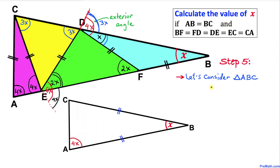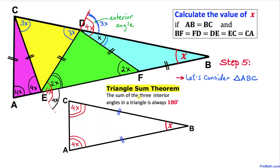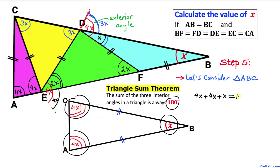Here is our final step. Let's consider the big triangle ABC. This triangle is also an isosceles triangle since AB equals BC — these two sides are equal in length — so this angle is also going to be 4X, meaning these two base angles are equal. The triangle sum theorem states that the sum of the three interior angles in a triangle is always equal to 180 degrees.